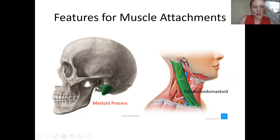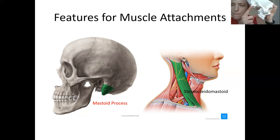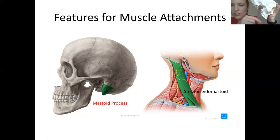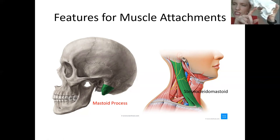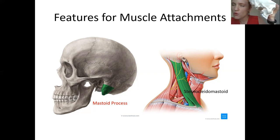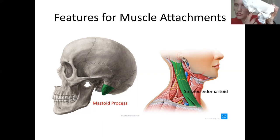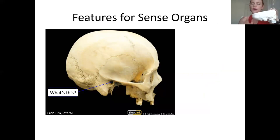There's one more to point out. The mastoid process is connected to the sternocleidomastoid, which is named based on its origin and insertion. Right next to it, this very sharp projection, is called the styloid process. The styloid process is also used for muscle attachments — we'll get to that more when we cover the muscular system, but know that it is used for muscle attachment.